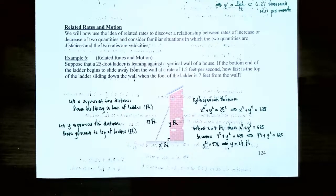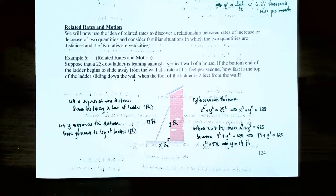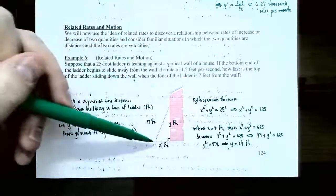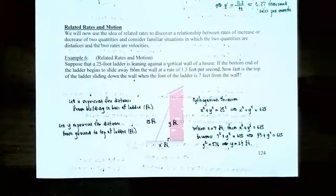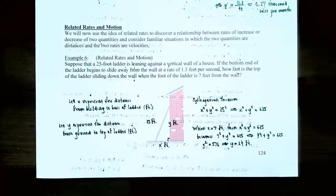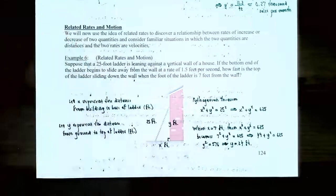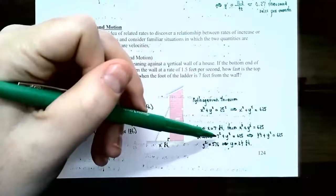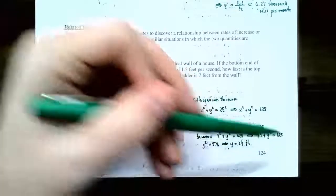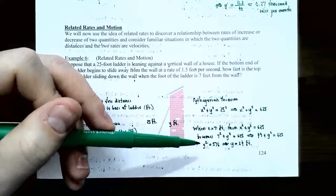It's important to identify the given information. The ladder is always 25 feet, so we don't need a variable for the hypotenuse. The problem tells us the ladder is 7 feet from the wall, so X equals 7. We use the Pythagorean theorem to find Y: plugging in X equals 7, we get 49 plus Y squared equals 625, so Y squared equals 576, and Y equals 24 feet.